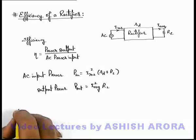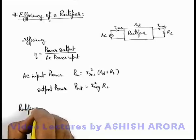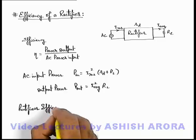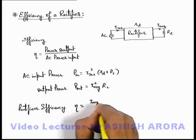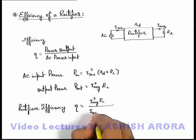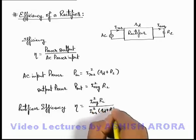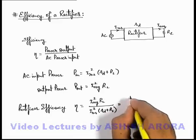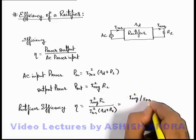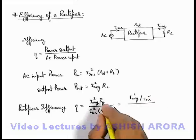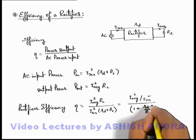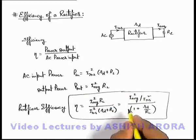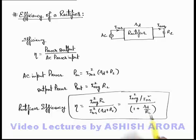So if we find out the rectifier efficiency, this efficiency can be given as output power by input power, which is I_average squared times R_L upon I_rms squared times (R_d + R_L). This can be further simplified to (I_average squared / I_rms squared) divided by (1 + R_d / R_L). This is the general expression for rectifier efficiency. On the next sheet we'll discuss about the typical efficiencies of a half wave and a full wave rectifier.